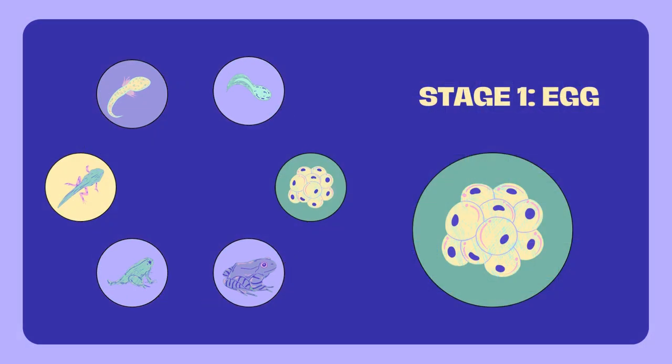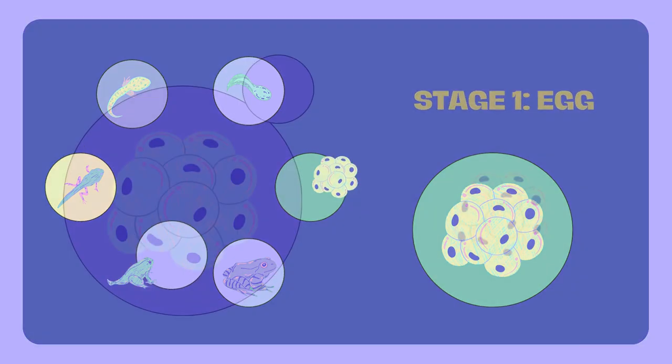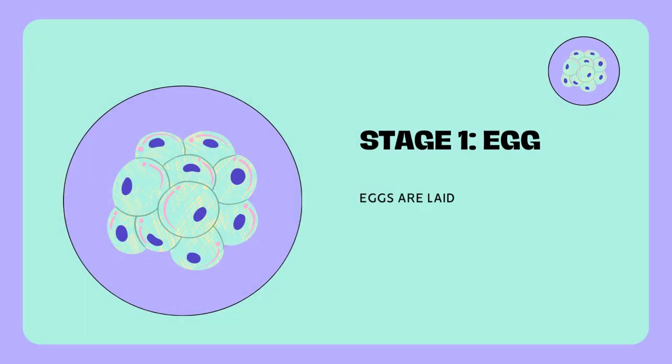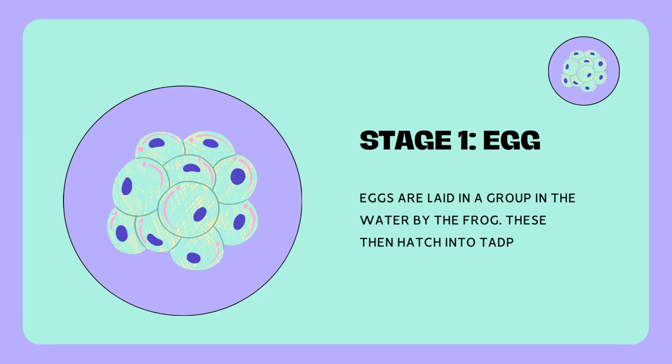Stage 1: Egg. Eggs are laid in a group in the water by the frog. These then hatch into tadpoles.